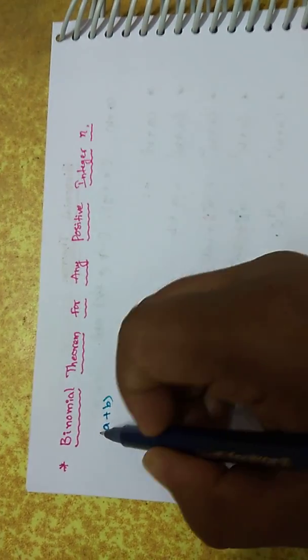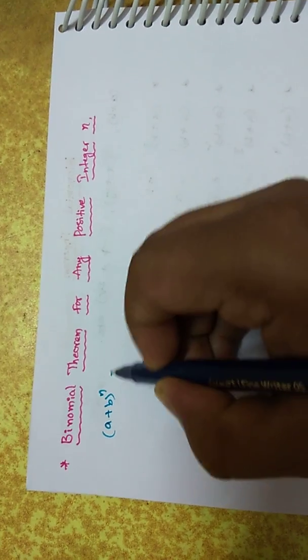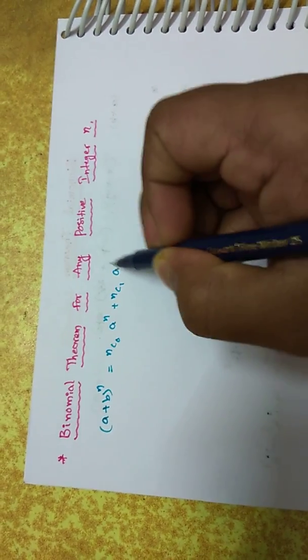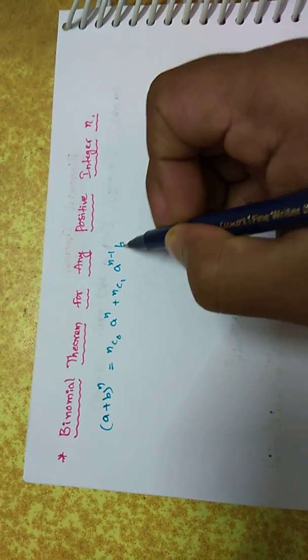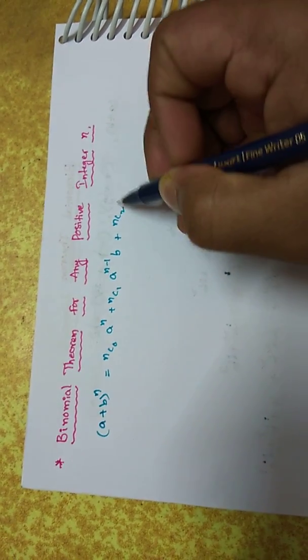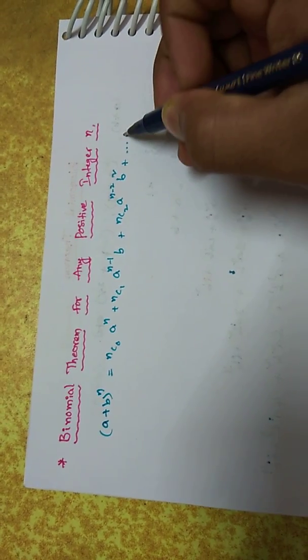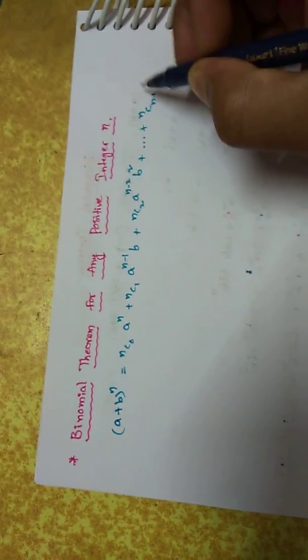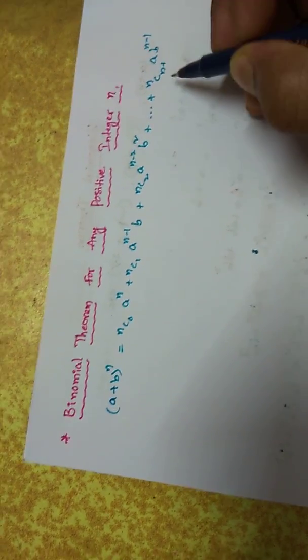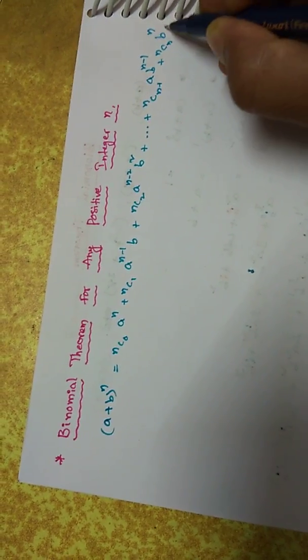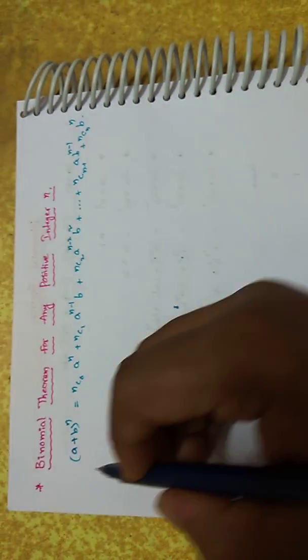Binomial theorem for any positive integer n: (a + b)^n = nC0 * a^n + nC1 * a^(n-1) * b + nC2 * a^(n-2) * b^2 + ... + nC(n-1) * a * b^(n-1) + nCn * b^n. Let us prove this statement.